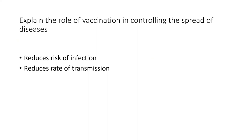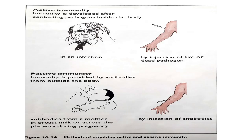The role of vaccination in controlling the spread of diseases: firstly, it reduces the risk of infection; secondly, it reduces the rate of transmission. There are two types of immunity: active immunity and passive immunity. Active immunity is developed after contact with pathogens inside the body — either from an infection or by injecting a live or dead pathogen. Passive immunity is where antibodies are provided from outside the body, such as through a mother's breast milk, across the placenta during pregnancy, or by injection of antibodies.